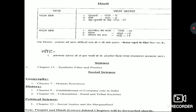In Political Science, you have one chapter that is deleted. That is Chapter 22, Social Justice and the Marginalized.